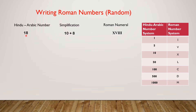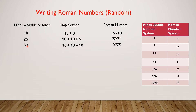18: simplification 10 plus 8, Roman numeral XVIII. Next number 25: simplification 10 plus 10 plus 5, Roman numeral XXV. Hindu-Arabic number 30: simplification 10 plus 10 plus 10, Roman numeral XXX.